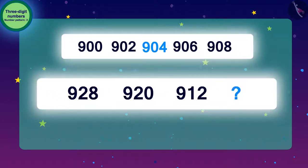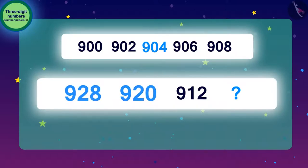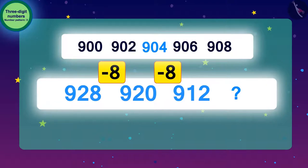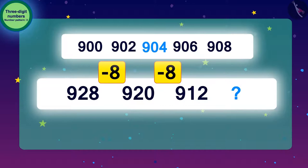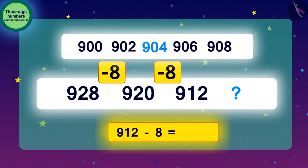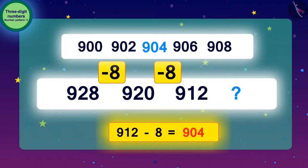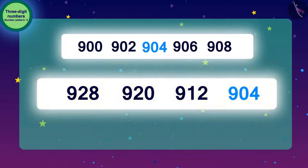Now we will find the number pattern of the second blank. To get from 928 to 920, we have to go 8 steps back — that means we have to subtract 8. To go from 920 to 912, we have to subtract 8. Similarly, to find the next number of this pattern, we have to subtract 8 from every number. The number pattern is ready, and the answer is got by subtracting 8 from 912, that is 904. Our second pattern is also complete.